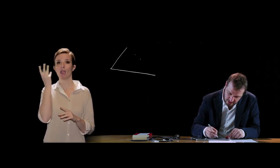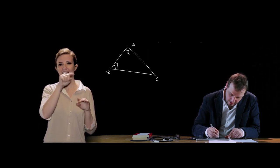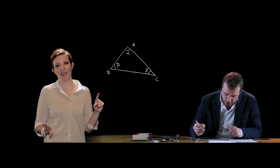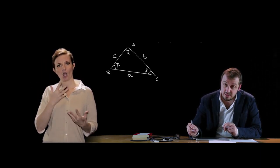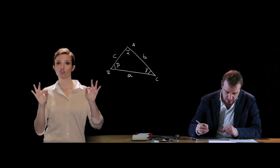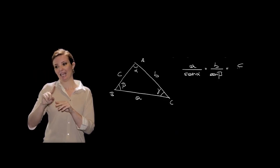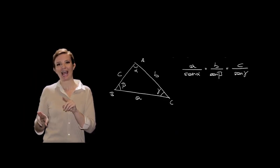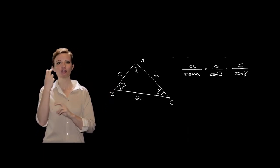Vediamo ora due teoremi molto importanti, applicazioni della trigonometria ai triangoli generici. Cominciamo col teorema dei seni, che si applica a un triangolo generico ABC, con angoli α, β e γ ai vertici A, B e C, e lati A, B e C. Il teorema dei seni ci dice che in un triangolo i lati sono proporzionali ai seni degli angoli opposti: A/sin(α) = B/sin(β) = C/sin(γ). Queste equazioni consentono di risolvere i triangoli, trovando lati e angoli.